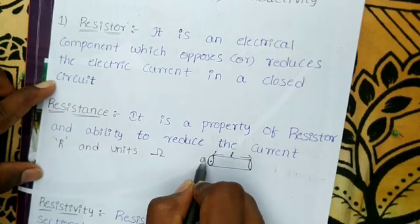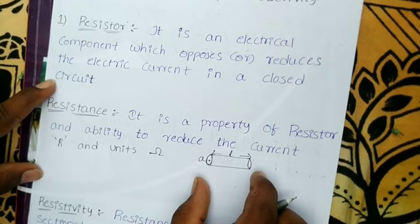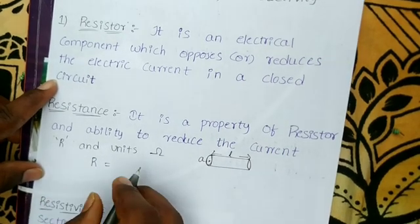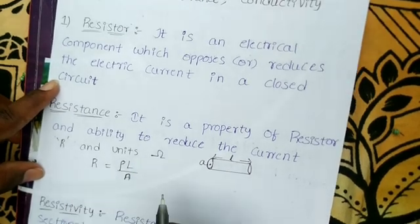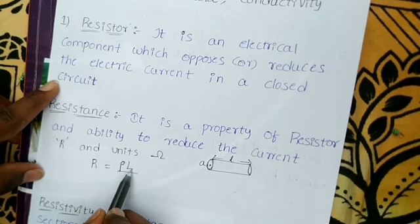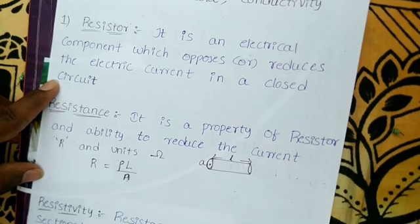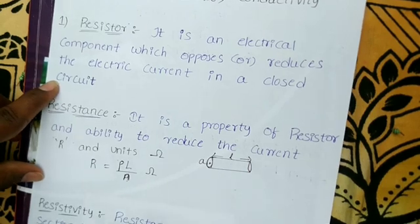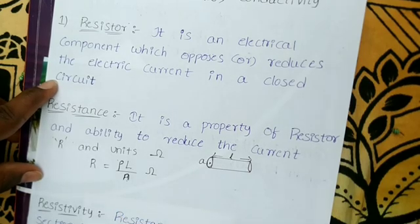Resistance depends on the area of cross section and material. The distance formula: R is equal to rho L by A, where L is the length of the conductor, A is the area of cross section, and rho is the resistivity of the material. The unit of resistance is Ohms.